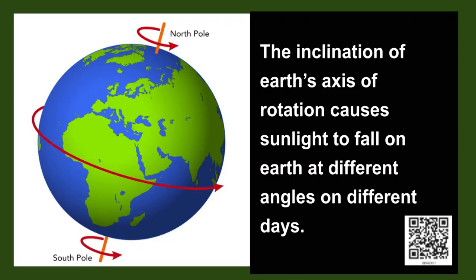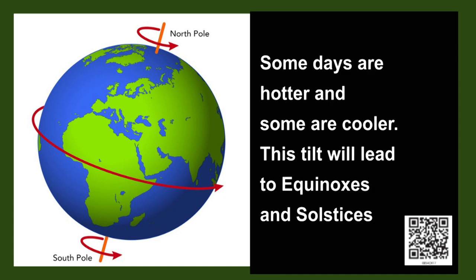This is due to the rotation and revolution of the earth. The inclination of earth's axis of rotation causes sunlight to fall at different angles on different days. Hence, some days are hotter and some are cooler. This tilt in the earth's axis of rotation leads to what we call equinoxes and solstices. Let us see what these are.